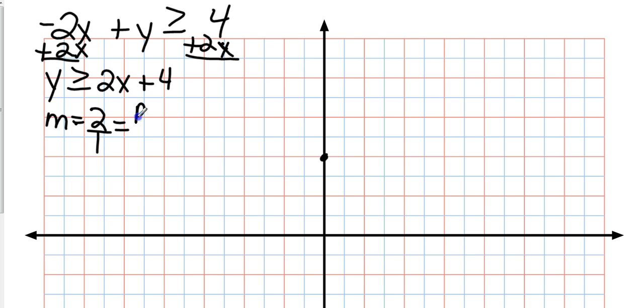So I'm going to rise 2 and run 1 in a positive direction. Rise 2, run 1. So 3 points is good enough. Now, it's greater than or equal to. So is that going to be a solid line or a dashed line? That will be a solid line. So we're going to go just like that.